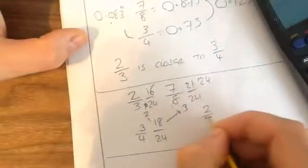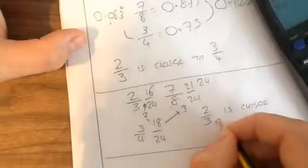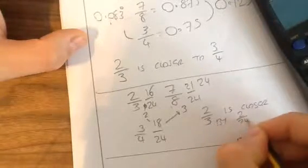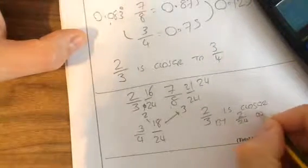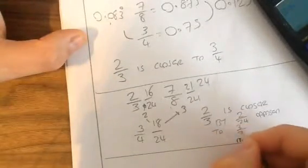So, again, 2 thirds is closer by 2 over 24, opposed to 3 over 24.